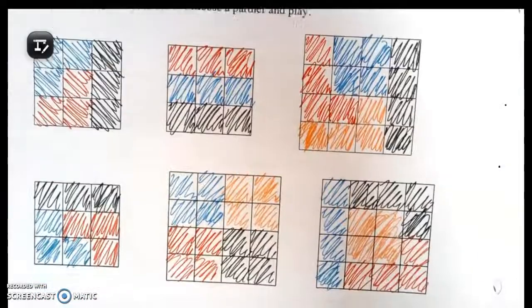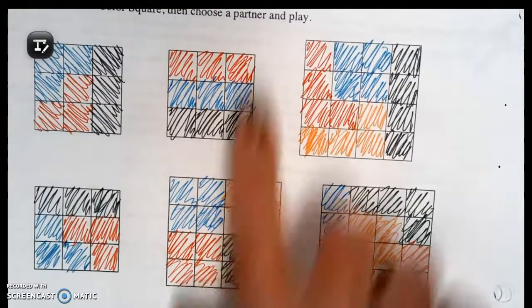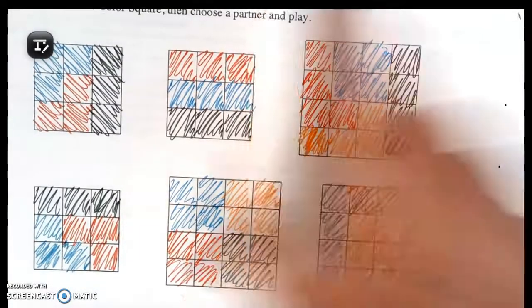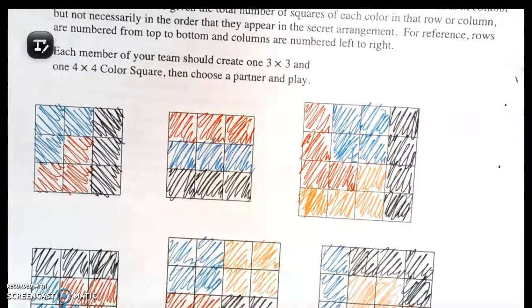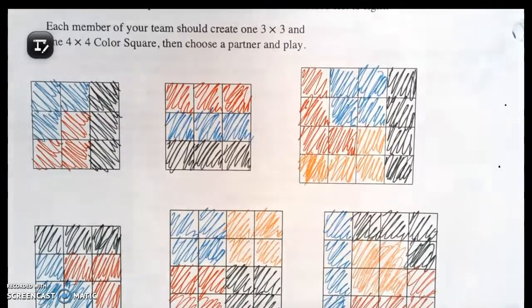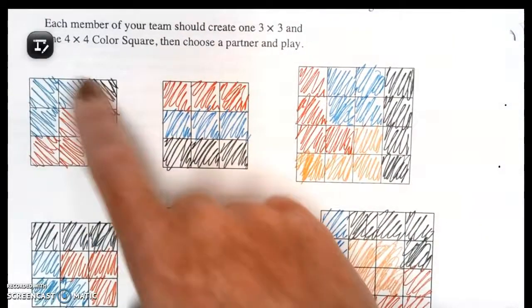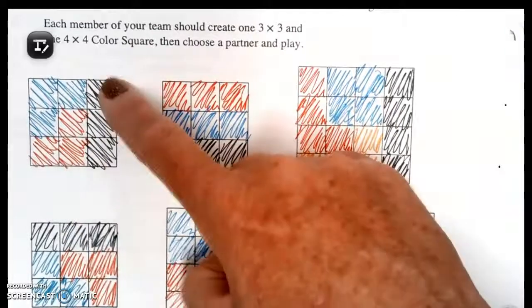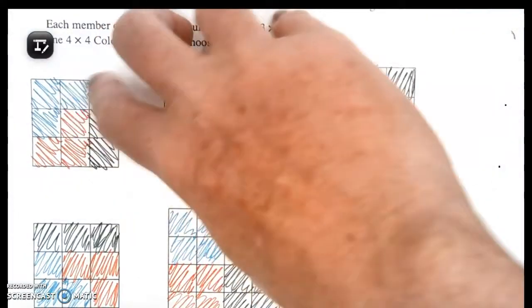Each member of your team could create one 3x3 and one 4x4, and then you would play. Basically, possible arrangements you could have is, here's your blues. You could have three blues over here, three reds down here, and then three greens. They would just have to be in a row, and they would have to touch on at least one side.